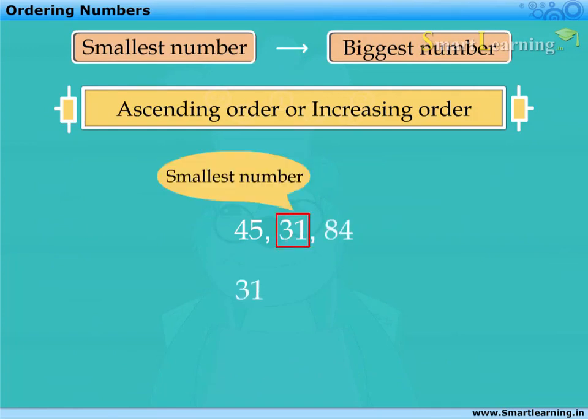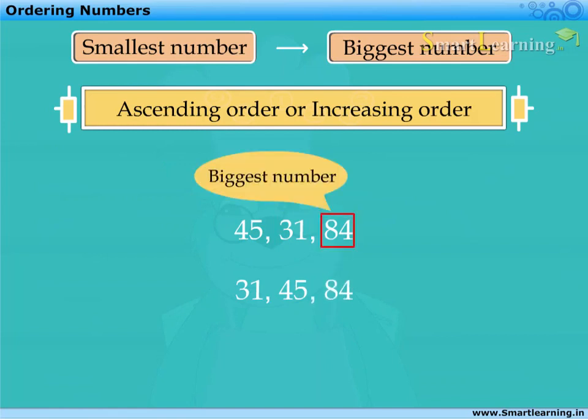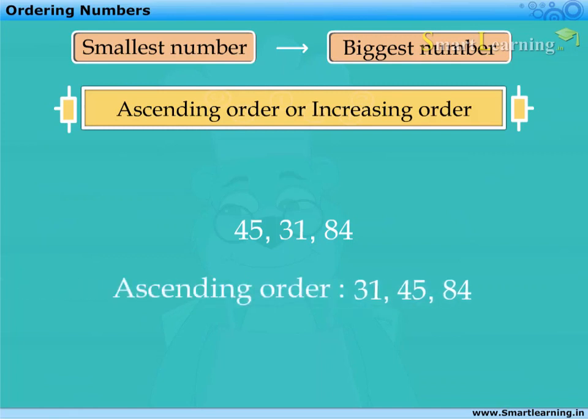31 is the smallest number and 84 is the biggest number. Therefore, they can be ordered as 31, 45, 84.